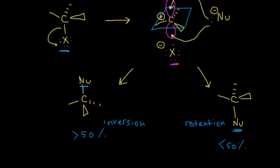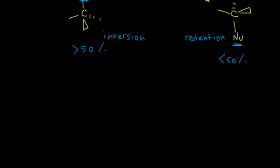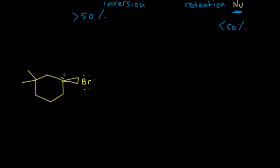Let's take a look at an example and think about stereochemistry in SN1 reactions. We have an alkyl halide — a cyclohexane ring with two methyl groups, a bromine coming out, and a methyl group going away from us. We're going to react this alkyl halide with NaSH. The first step is to identify your leaving group, which is the bromine. Then think about what the nucleophile is — that would be the negatively charged anion, the hydrogen sulfide anion, SH minus. So SH minus is the nucleophile and bromine is the leaving group.